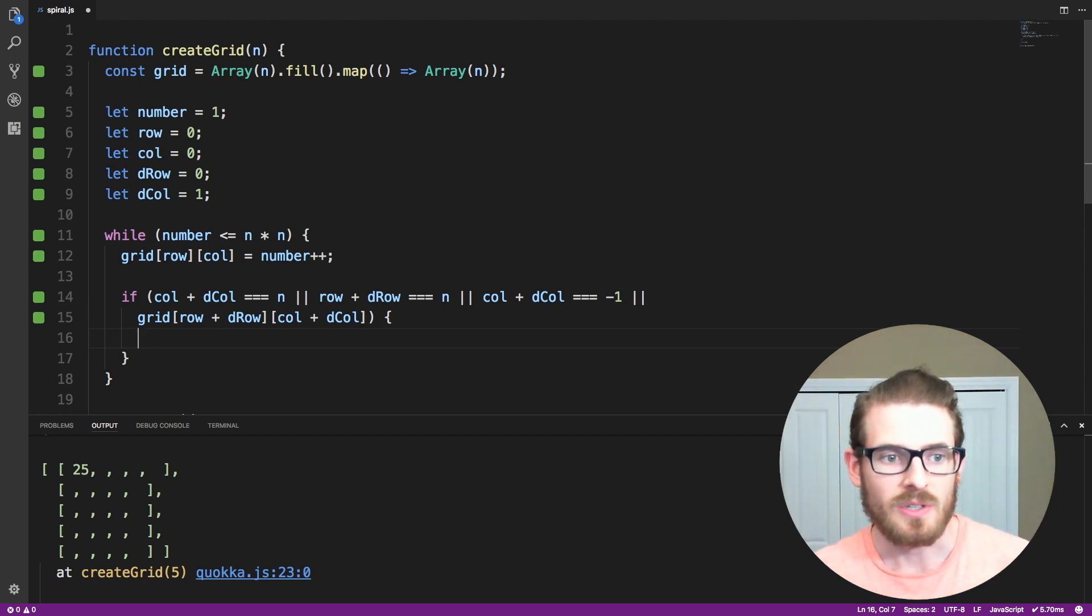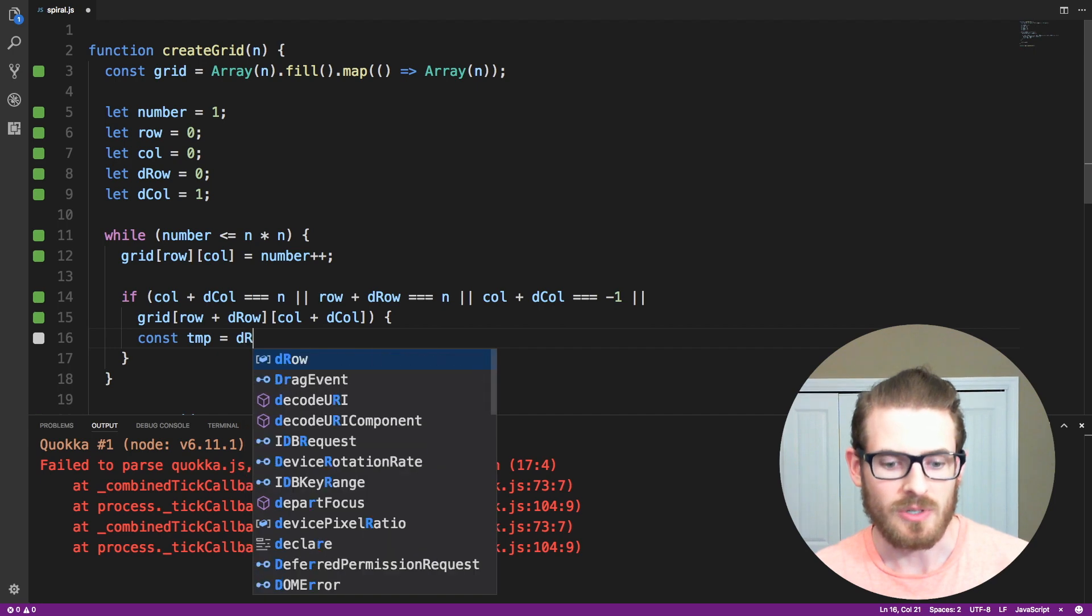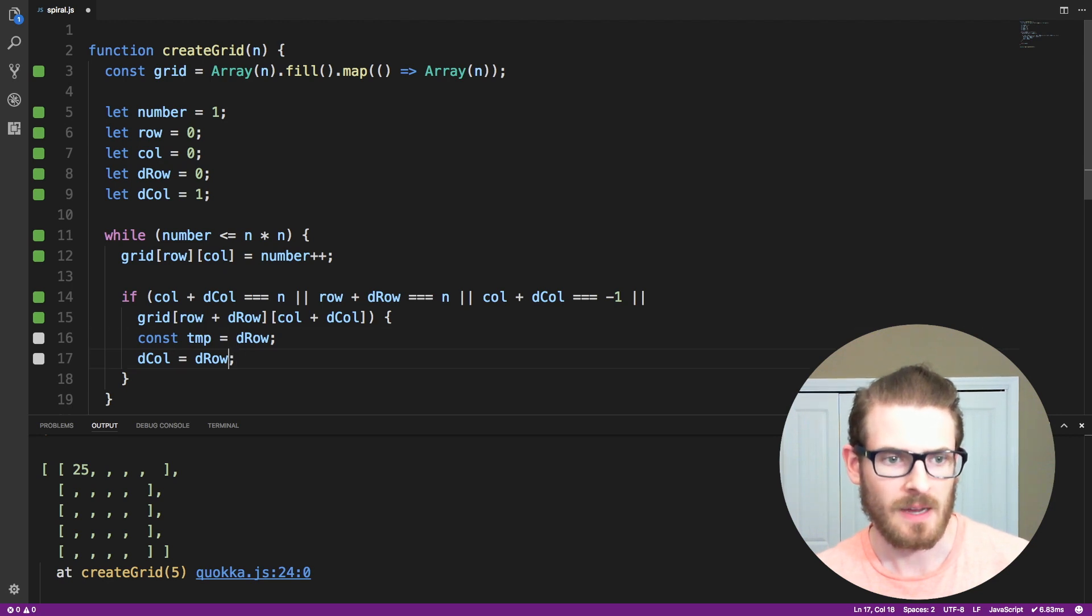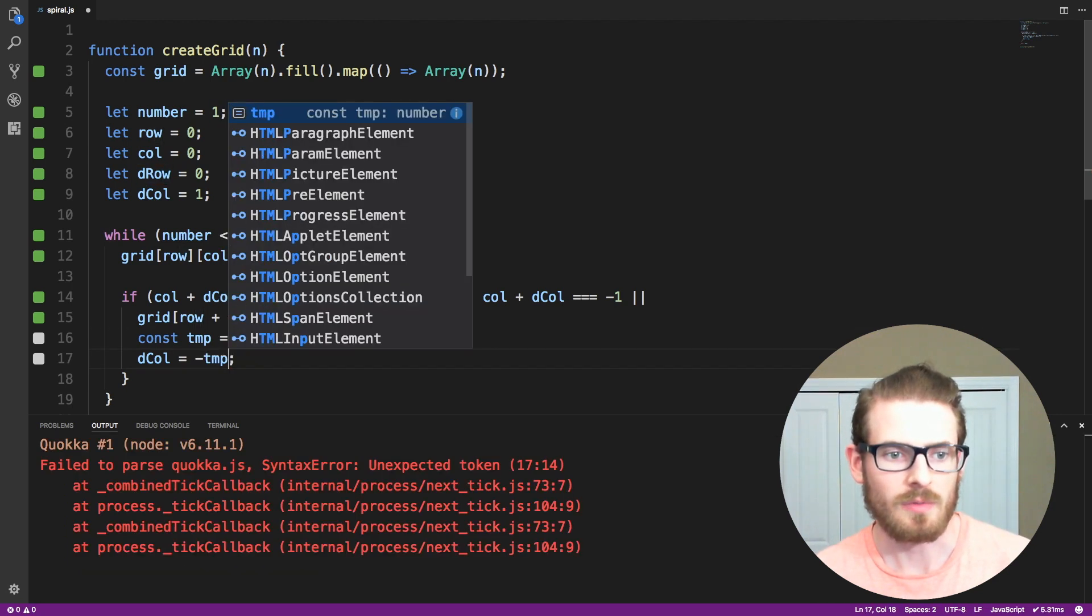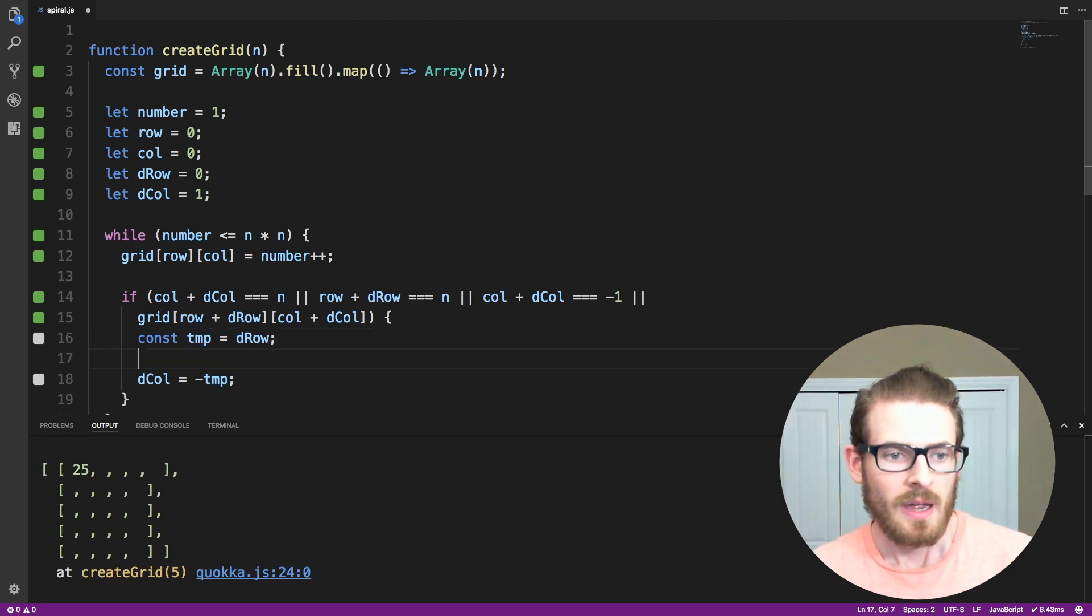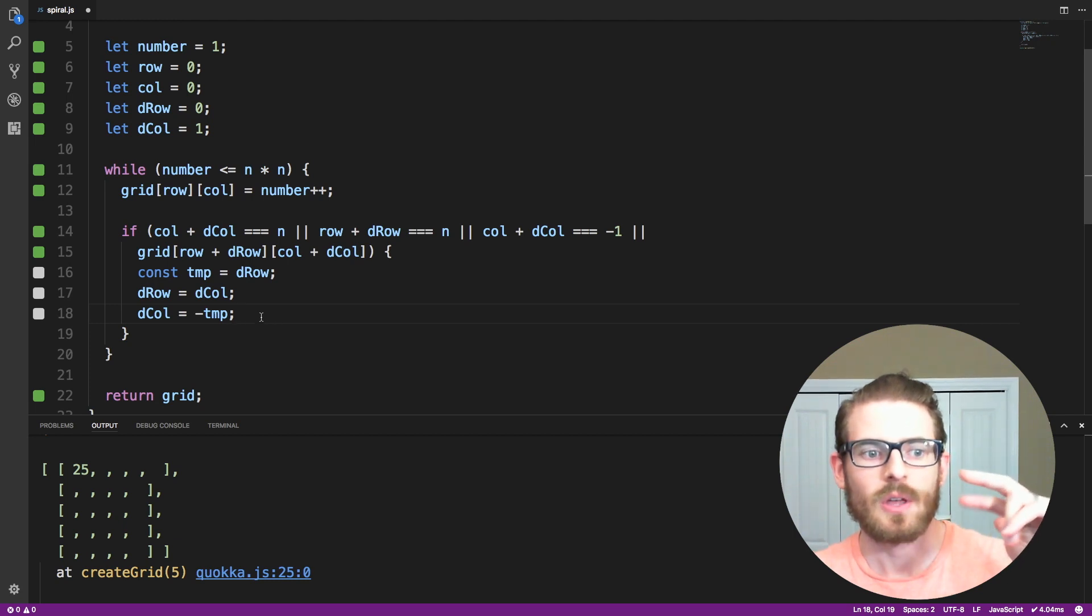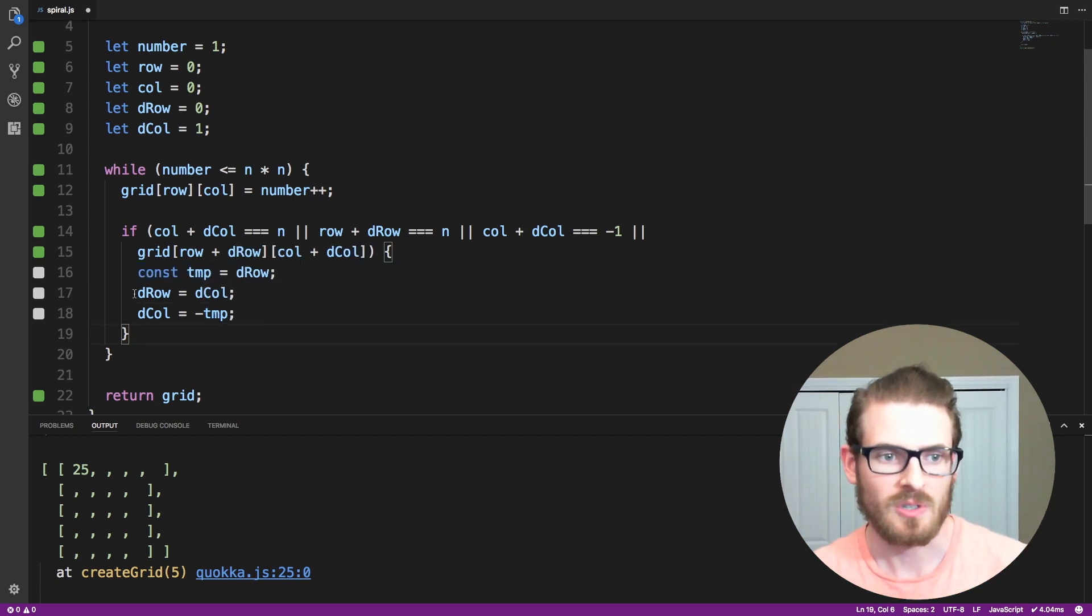So to do that, what we can do is just declare a temp value and set it equal to drow. So we can set dcolumn equal to the temp of drow. And then drow is going to be equal to dcolumn. So the exact logic that we did over there, we just set the row equal to dcolumn. We set dcolumn equal to drow negated, but we need to use this kind of temp variable to keep track of it, because we're going to overwrite it on line 17. So we need to bring in another constant called temp so we don't overwrite.